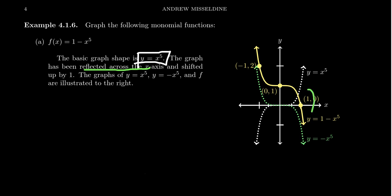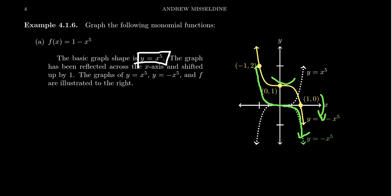So if you take this white function and reflect it across the x axis, you're going to get a picture that looks something like the following. I want to mention that if you look at just this graph, is this a reflection across the x axis or is this a reflection across the y axis? And as you look at those, it looks like both, right?